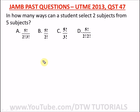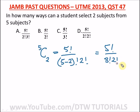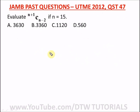Our next question, from JAMB 2013 (UTME 2013), question 47: 'In how many ways can a student select two subjects from five?' Our number of subjects is 5, so we have 5 combination 2, which gives 5 factorial over (5 minus 2) factorial times 2 factorial — that is, 5 factorial over 3 factorial times 2 factorial. Our right option here is option A.